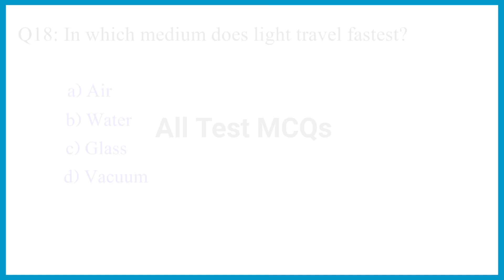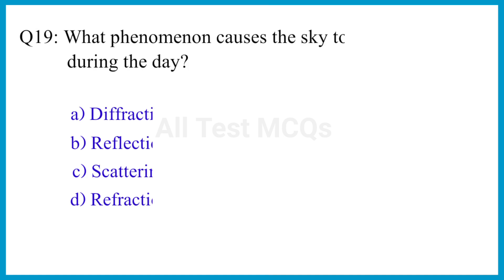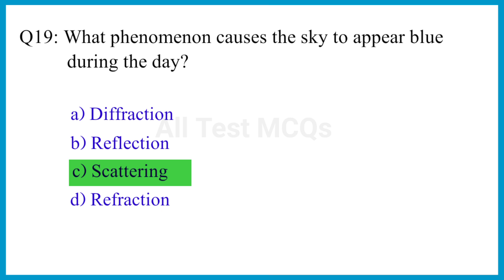Question number 19. What phenomena causes the sky to appear blue during the day? The correct answer is option C. Scattering.